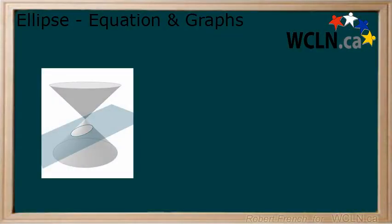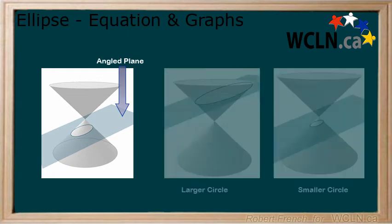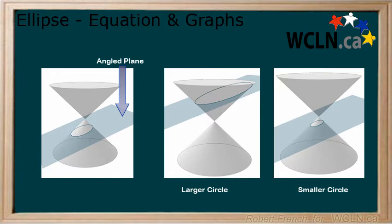First, let's look at how the ellipse is generated in reference to the double-napped cone. A plane at an angle anywhere along the double-napped cone will create an ellipse. As we move the plane vertically, we can see the size of the ellipse changes.